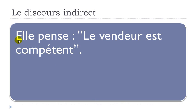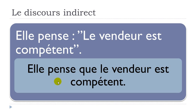Let's start with a few examples. I wanted to put simple word sentences here: elle pense — penser is to think — le vendeur est compétent. Le vendeur is the seller, est is 'is', compétent means competent. It's of course possible to use a sentence like that: elle pense, and then in quotes, le vendeur est compétent. The whole concept of this discours indirect is that she thinks that — elle pense que.